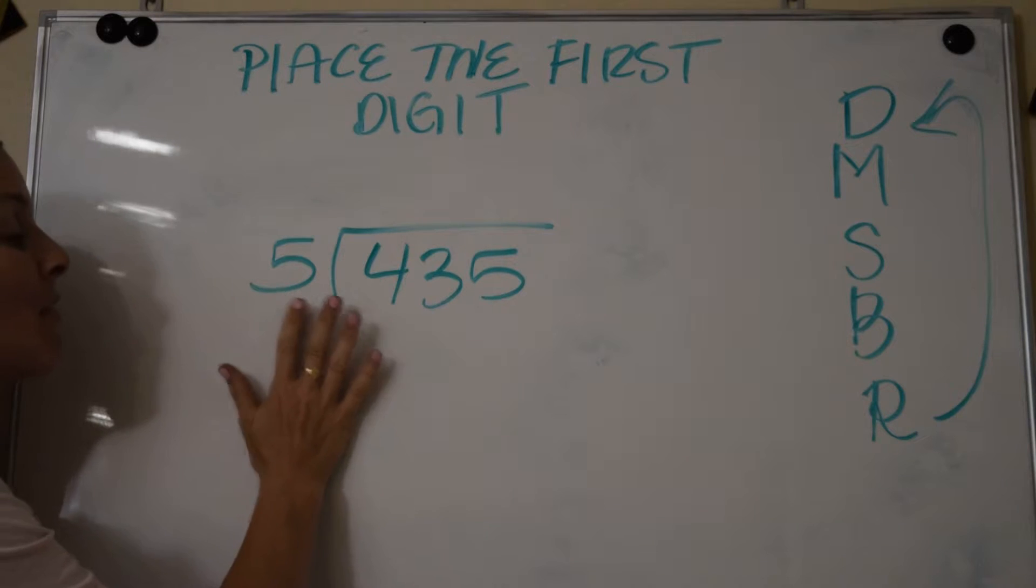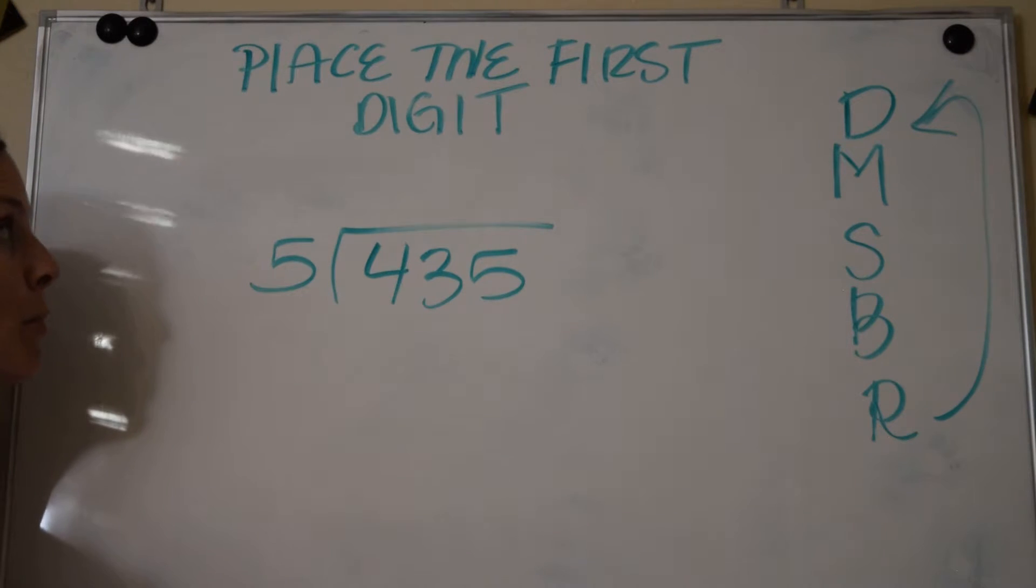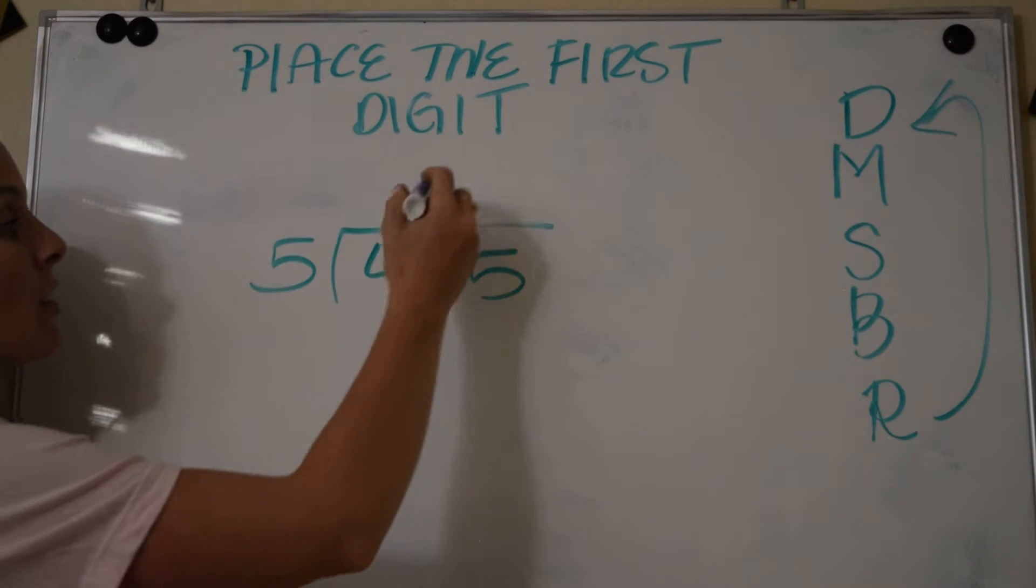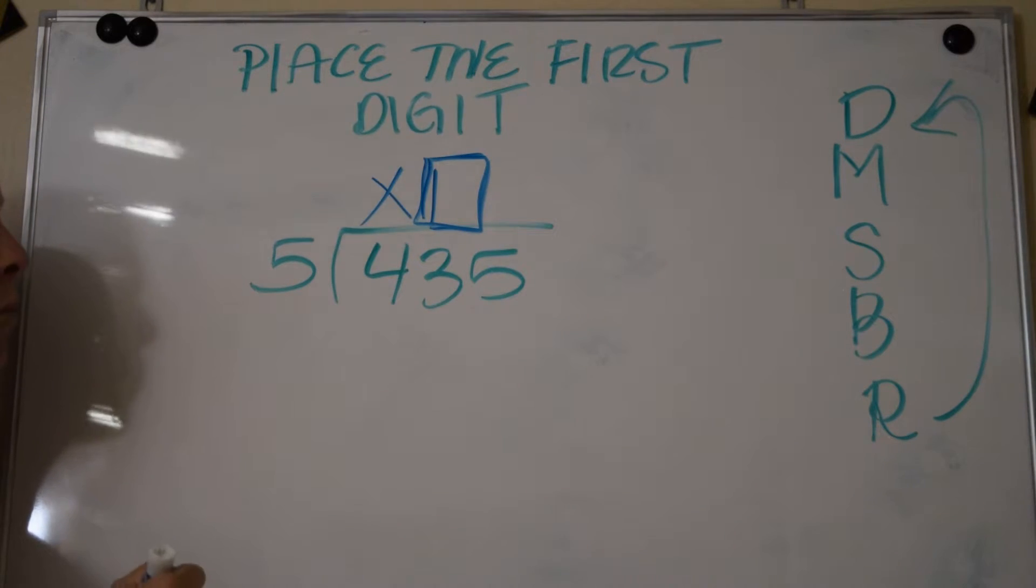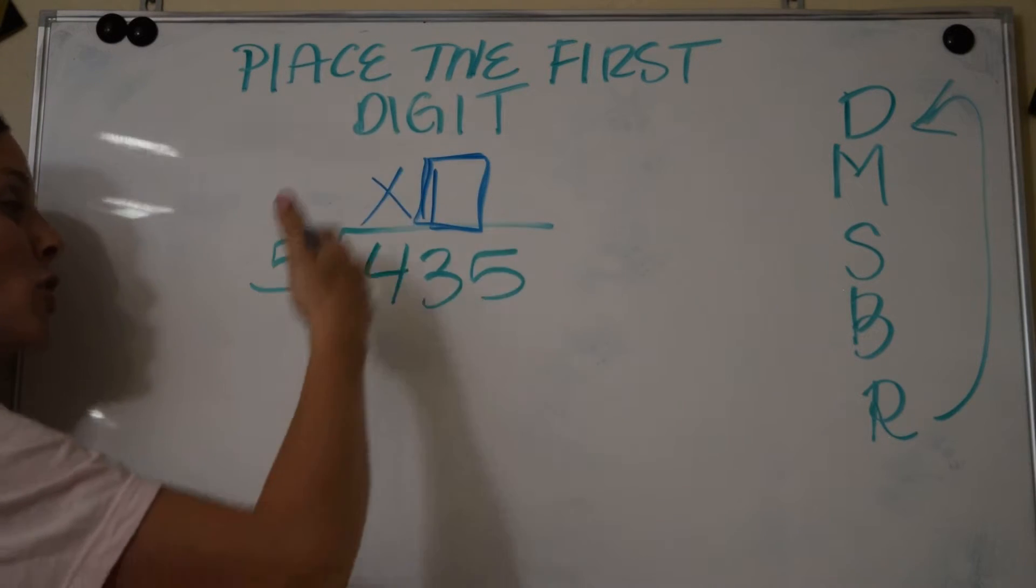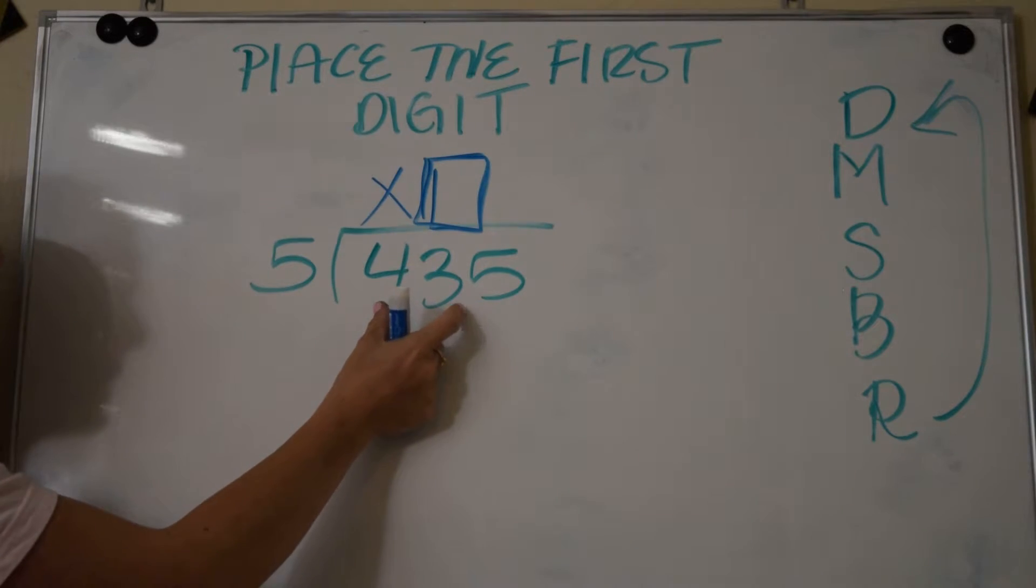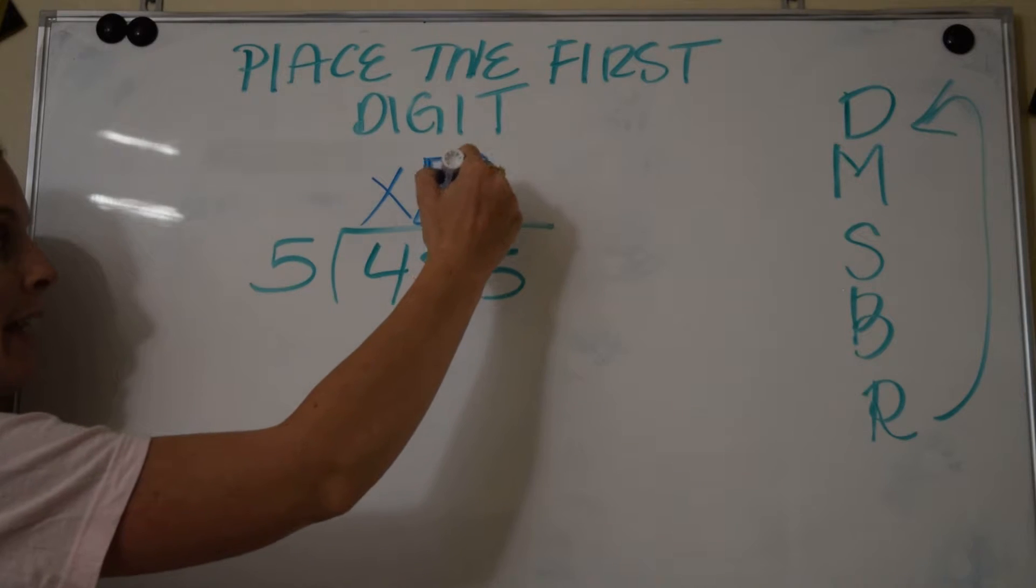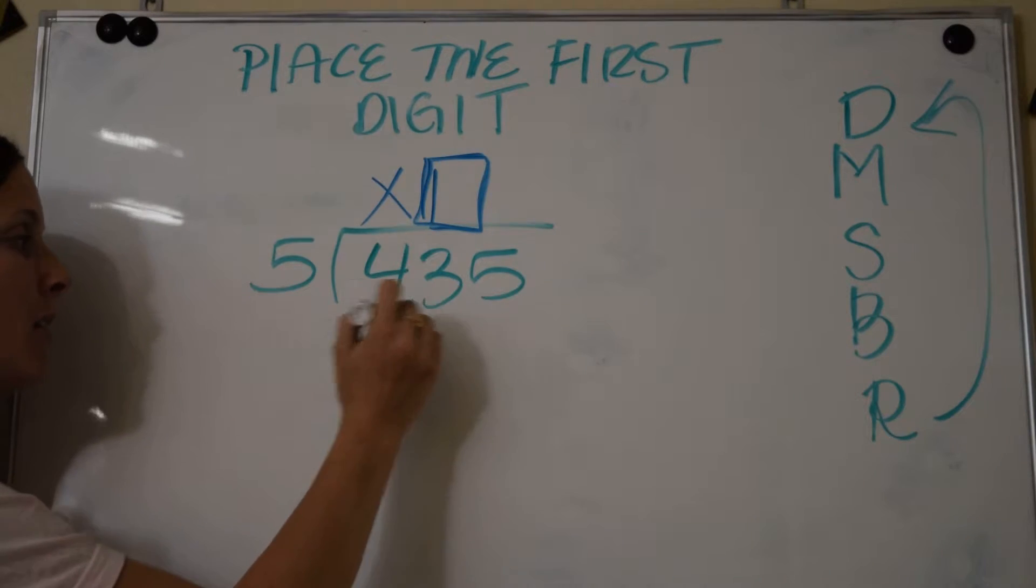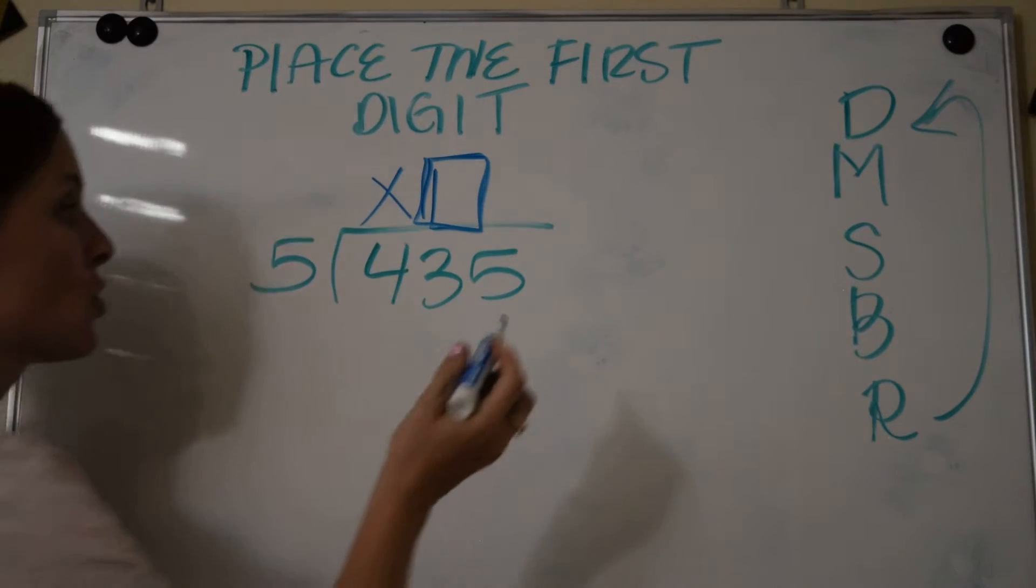So now we have to think, how many times can 5 go into 43? So basically that means where are you putting your first digit of your answer? It's going to go above the 3. There's not going to be any number here. So where do we place the first digit? That's what all this lesson is about. Make sure you place it in the right spot. If I'm going to have to use the second digit and say how many times can 5 go into 43, whatever the answer is it needs to go right above the 3, not above the 4.